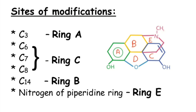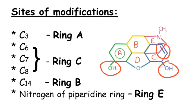The sites of modification in the structure of Morphine are: C3, which is the phenolic group; C6, which is the alcoholic group; C7 and C8, which is a double bond; C14, which is present in Ring B; and the nitrogen of the piperidine ring.